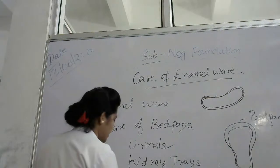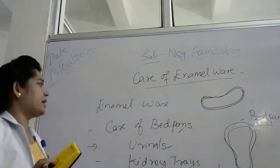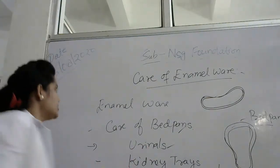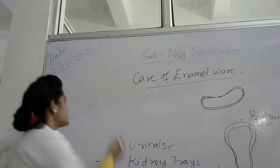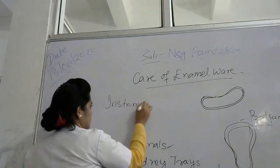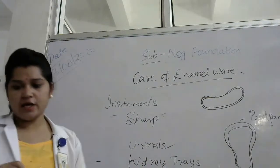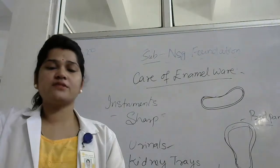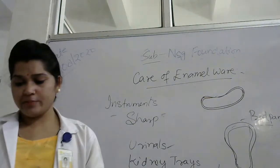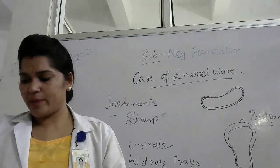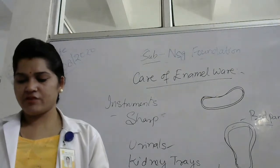Care of instruments: what are the enamel articles — bed pans, urinals, kidney trays, sputum cups — and then instruments. Sharp instruments include knives, scissors, needles, and syringes. The edges can be dulled by rough use and exposure to high temperature or moisture. Sharp instruments are sterilized by hot air at a temperature of 160 degrees Celsius.